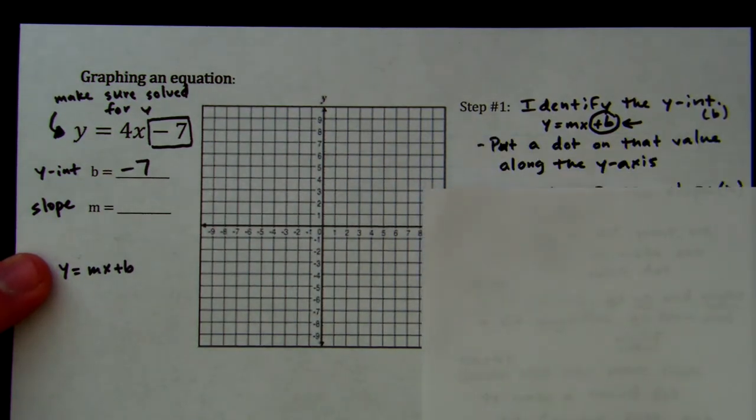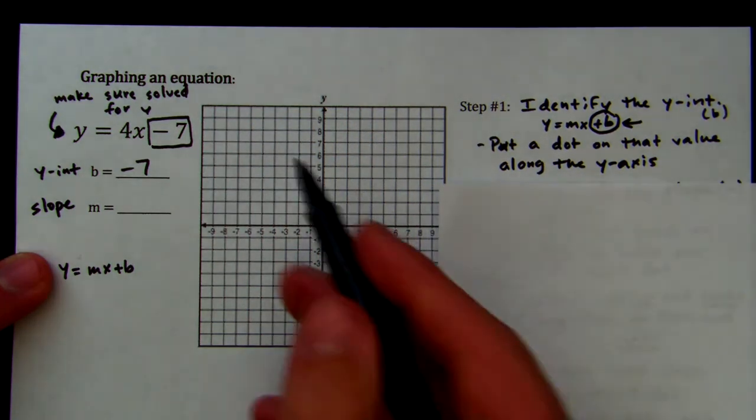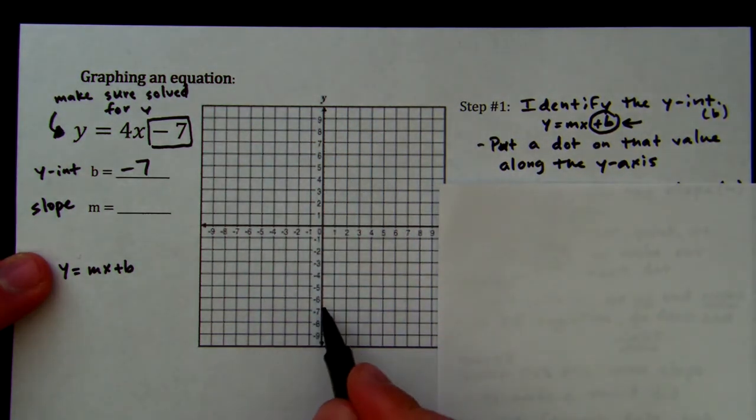So, our first step, we identify the y-intercept, which we just did. Now, along the y-axis, we put a dot for whatever value our b is. So I'm going to look on the y-axis here, and I'm going to find negative 7, right here, and I'm going to put a dot, just like that.